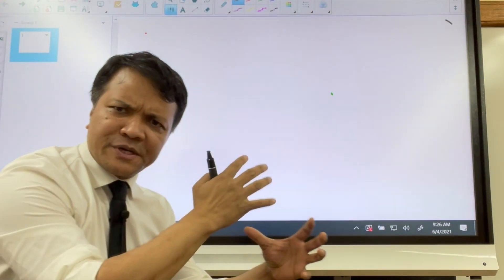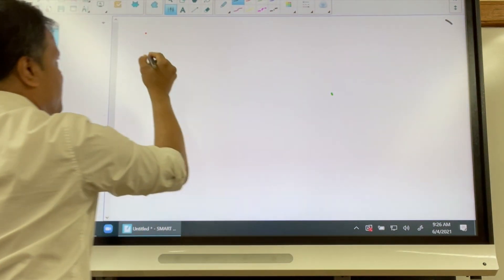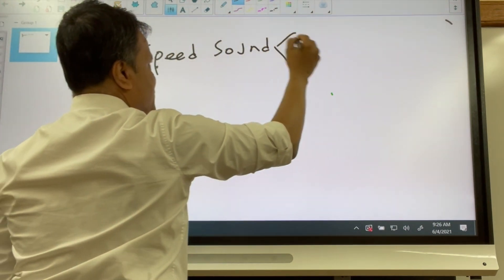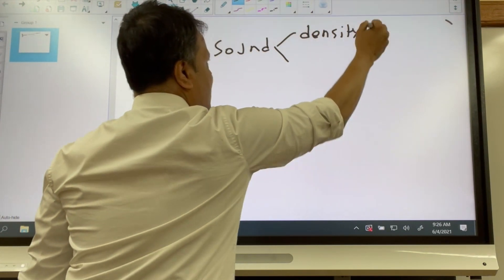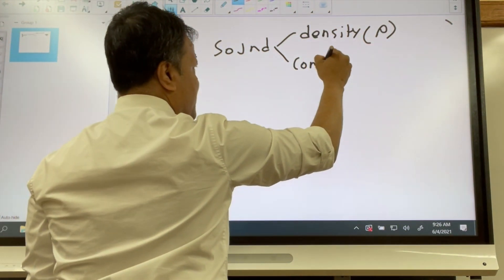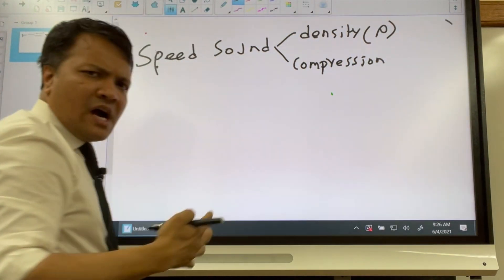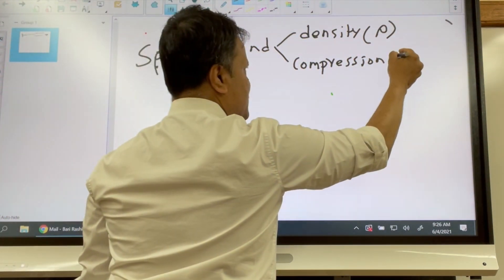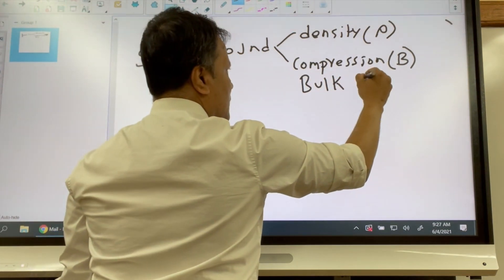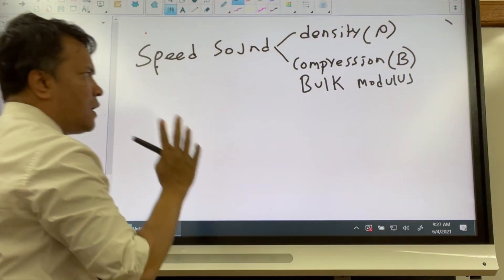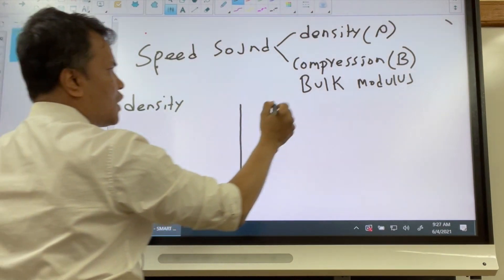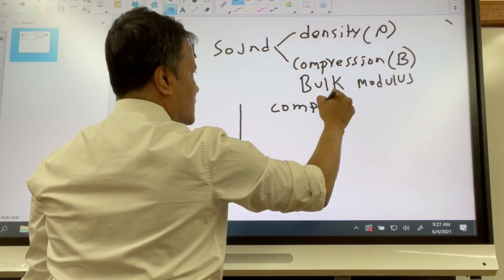Now the next question is what speed of sound depends on. It depends on two things. Our investigation shows speed of sound really depends on two things. One is the density, we're going to use rho as the symbol. The other one is compression, how hard is it to compress something, and we're going to use B. Sometimes compression is also called bulk modulus.